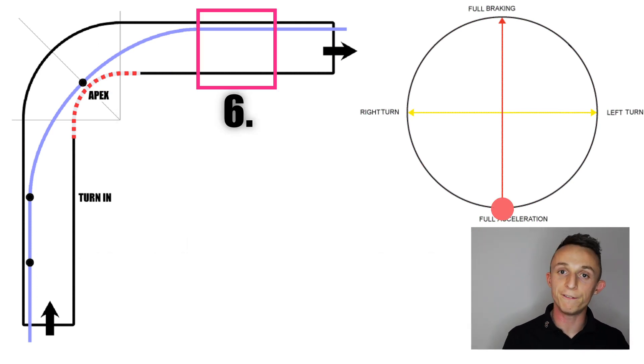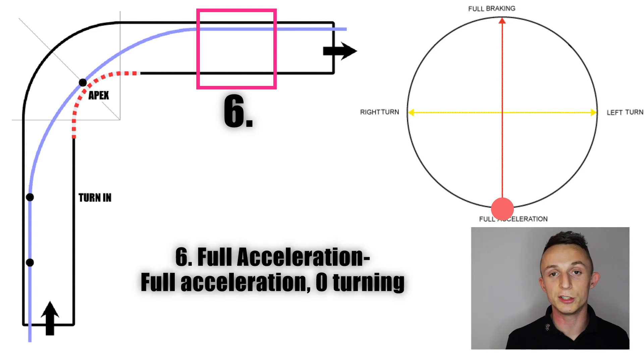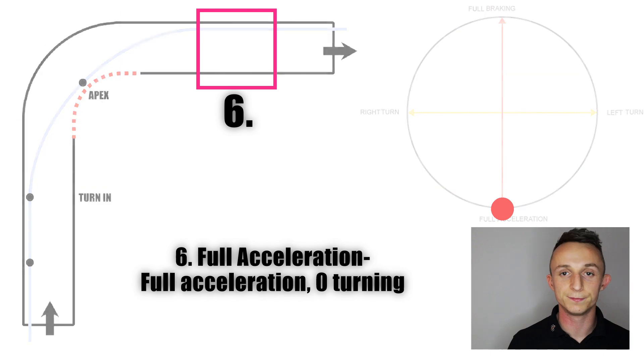Once we've come out of the corner and finished our turning, we're in a straight line using full acceleration — the dot is now at the bottom of the graph. I explored ways to push these limits in my previous video on how to learn a circuit, so make sure you check out that video for more detail on how to learn to use those systems and find where the maximum grip is.